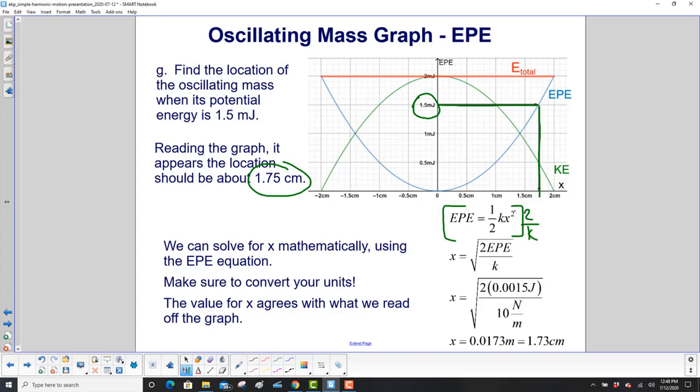And that will give you X squared. And then you have to take the square root. We did a bunch of algebra steps in one here. So X is the square root of 2 EPE over K. Put in our numbers, converting millijoules to joules. And you get 0.0173 meters. Or, move the decimal 2 to the right, and you get 1.73 centimeters. And that's pretty close to what we estimated using the graph.